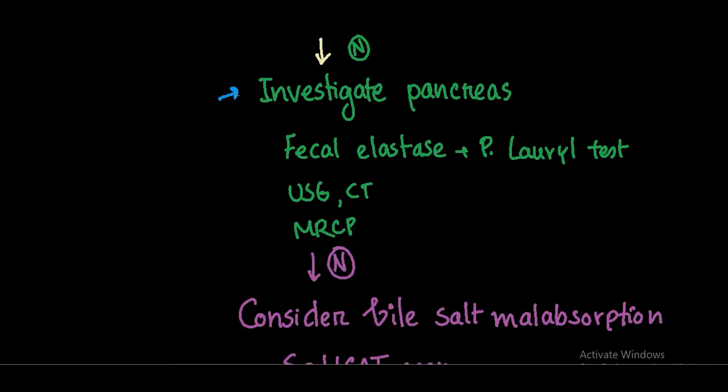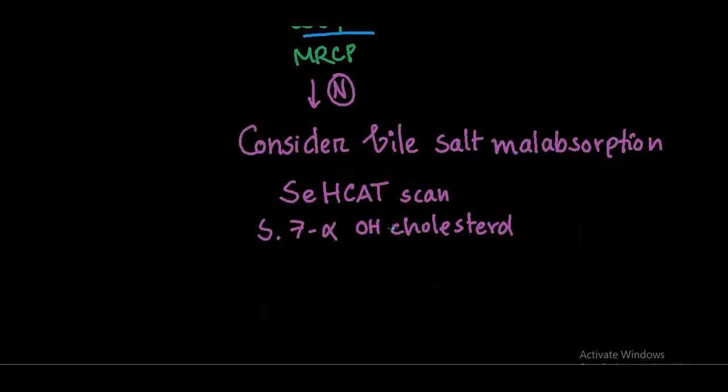If those tests are all normal, we investigate the pancreas. The functional tests are fecal elastase and the Pancreolauryl oral test. The next step is ultrasonography of the pancreas to look for calcification or masses, and the best test would be MRCP.